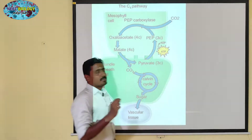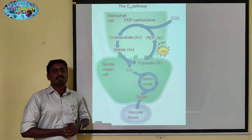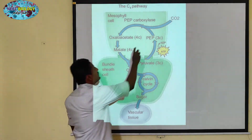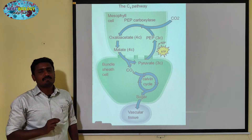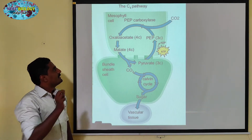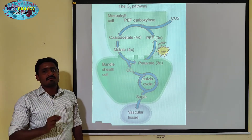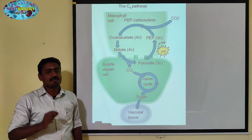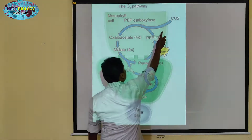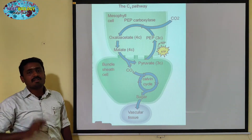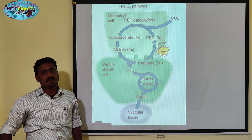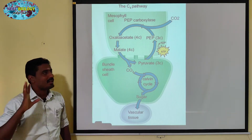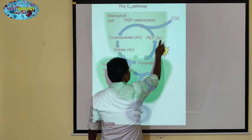First of all, PEP, i.e. phosphoenol pyruvic acid, is available in C4 plants. In C3 plants, RuBP absorbs carbon dioxide — that fixation is a process. In C4 plants, the carbon dioxide is fixed by phosphoenol pyruvic acid in the mesophyll cell, which has a granal type of chloroplast.